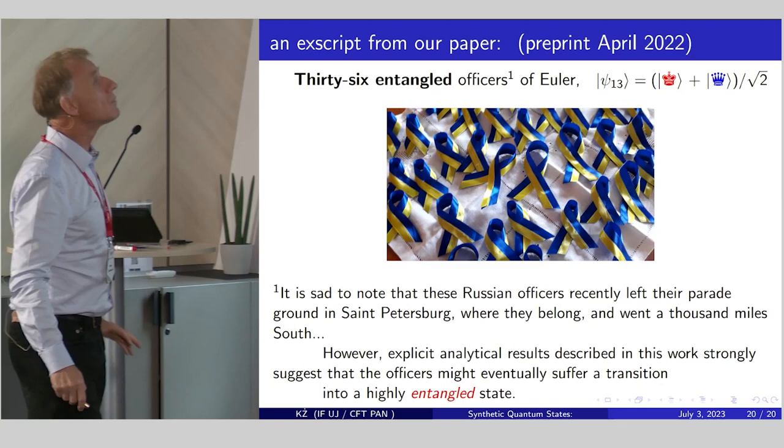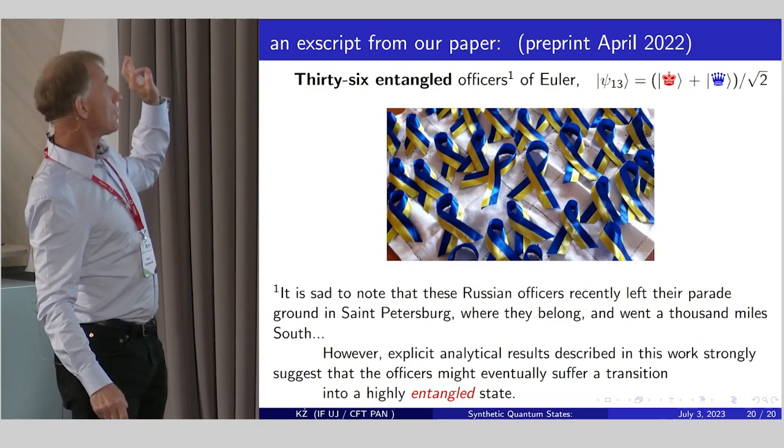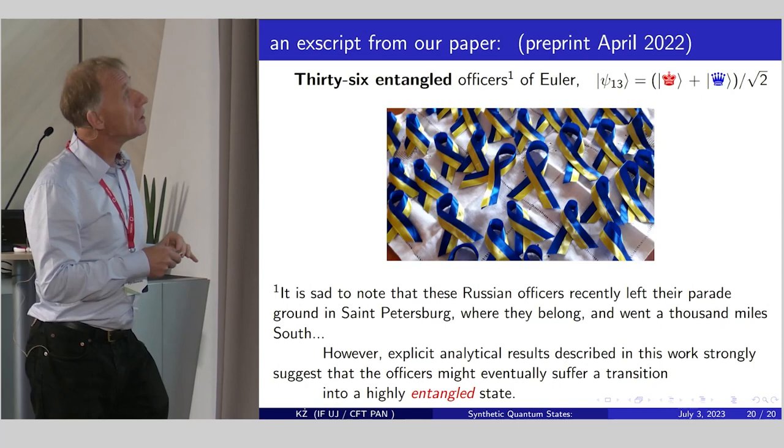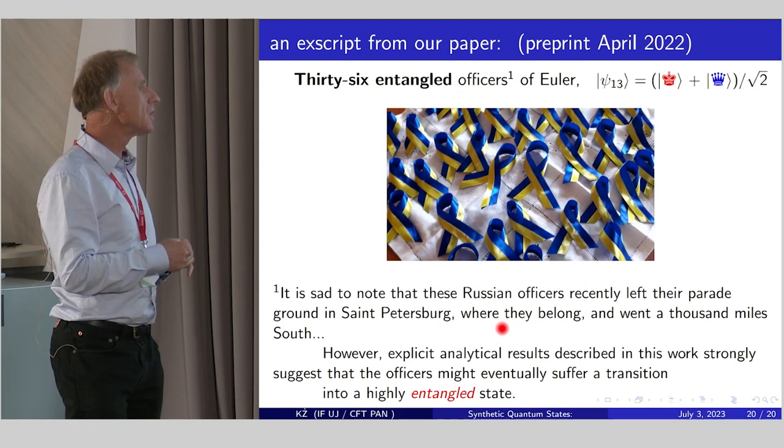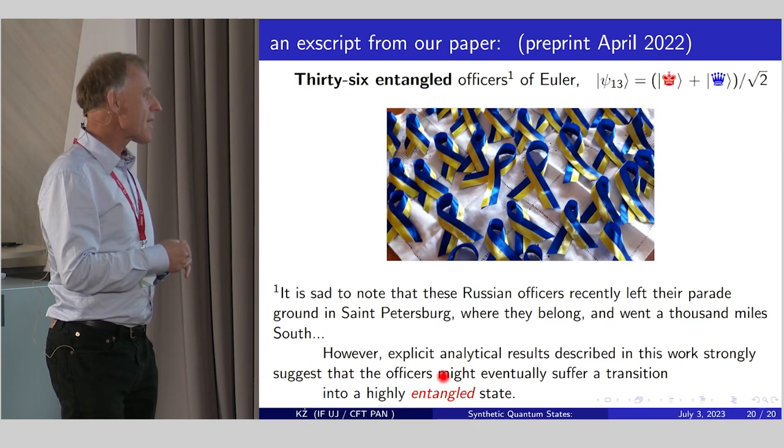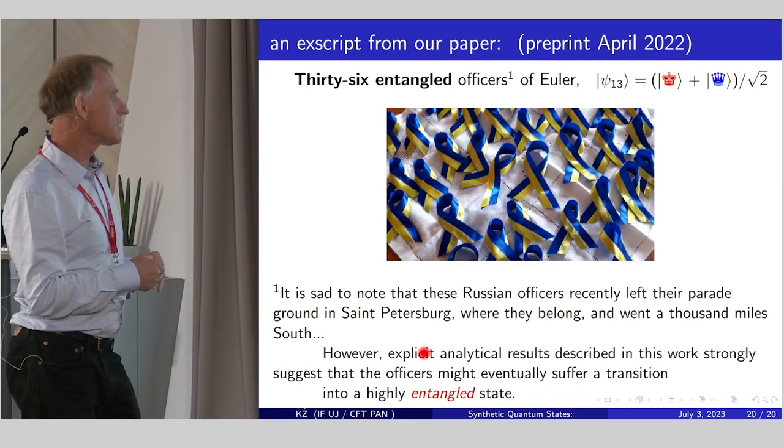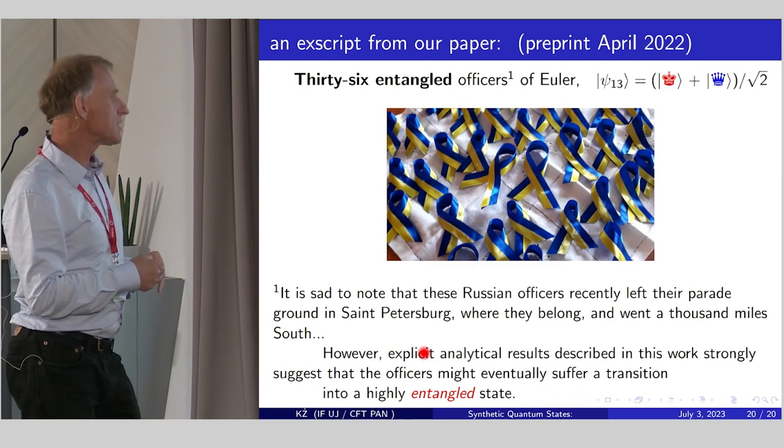And now I will finish with one more statement. Last year, in April 2022, we published a second paper on the same topic about 36 entangled officers of Euler, and we have written in April 2022. It is said to note that these Russian officers recently left the parade ground in St. Petersburg, where they belong, and went a thousand miles south. However, explicit analytical results described in this work strongly suggest that the officers might eventually suffer a transition into a highly entangled state. Thank you.